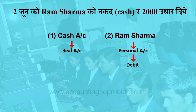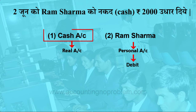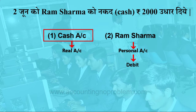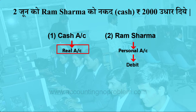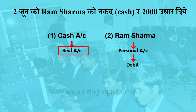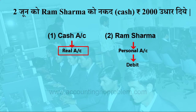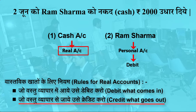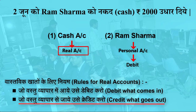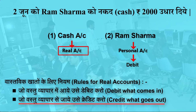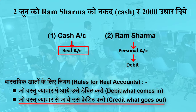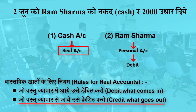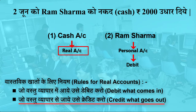अब Cash का खाता देखते हैं — Cash गया है. This is a Real Account and the rule for Real Account is Credit what goes out, that is Cash account will be credited.